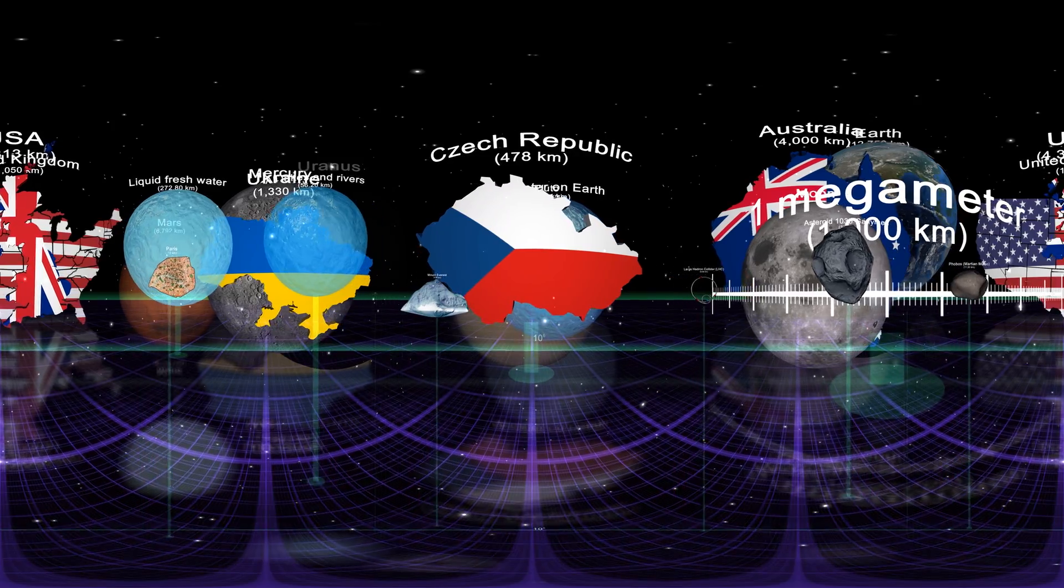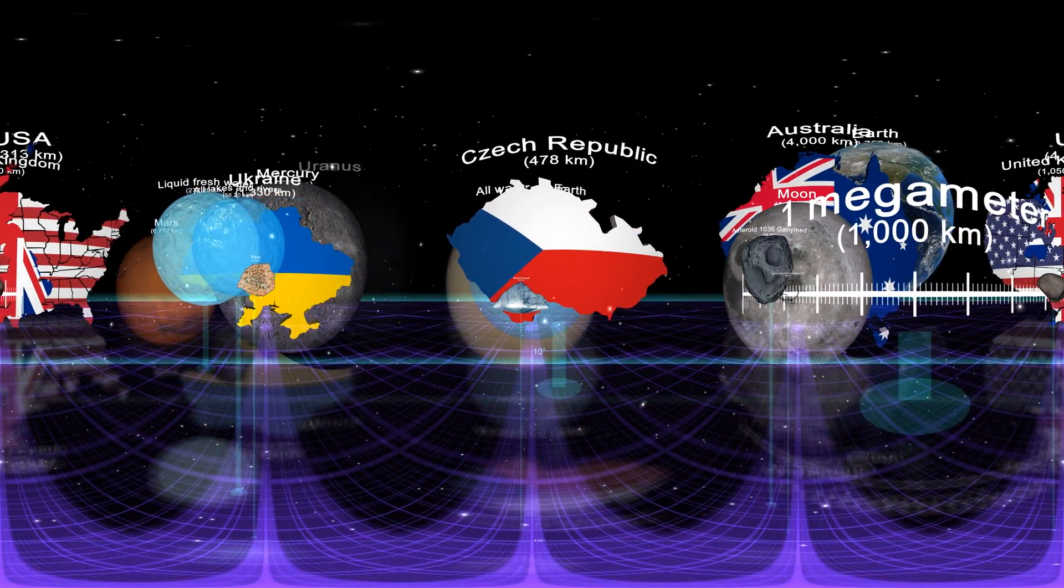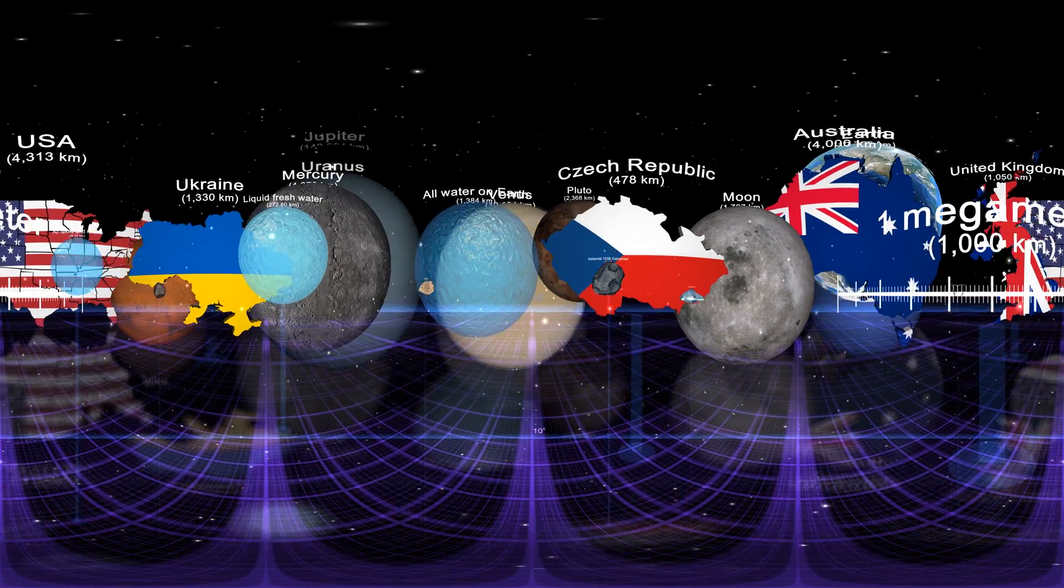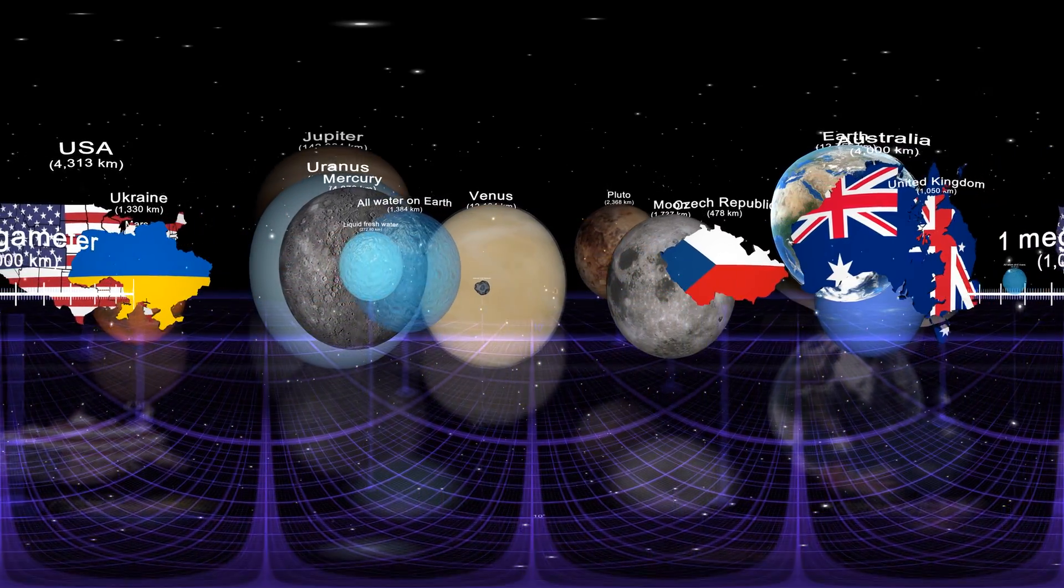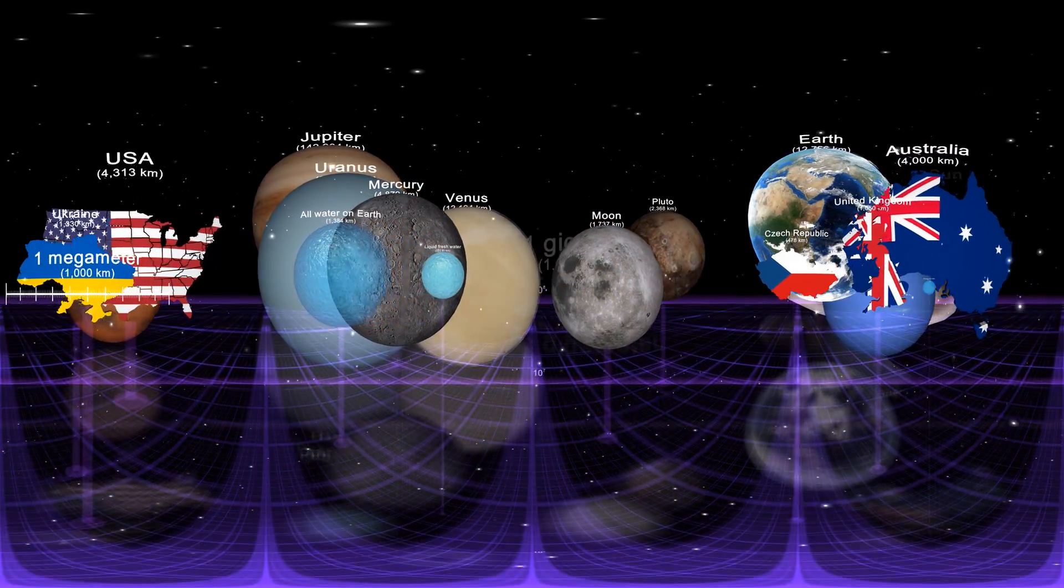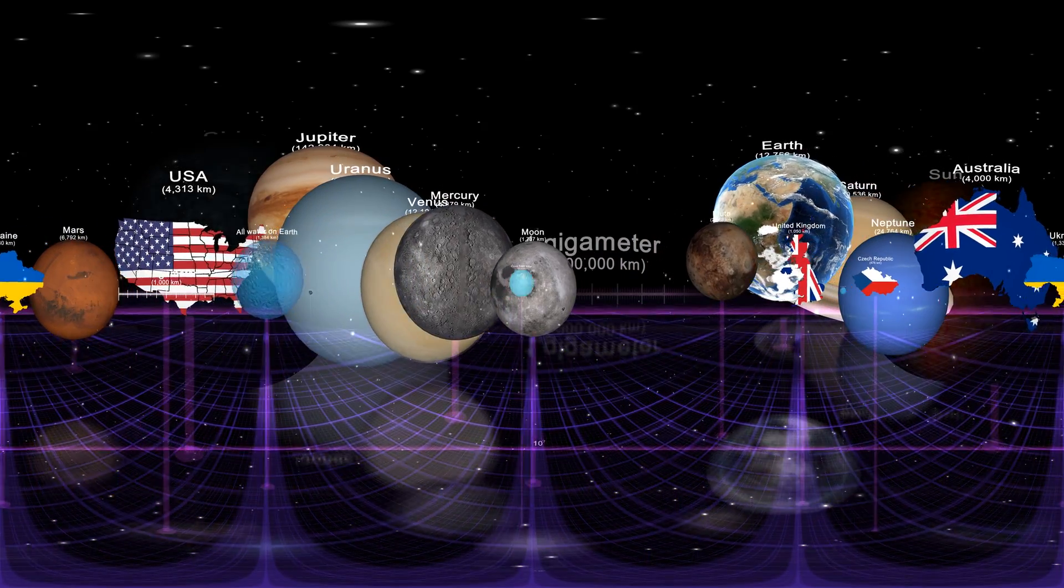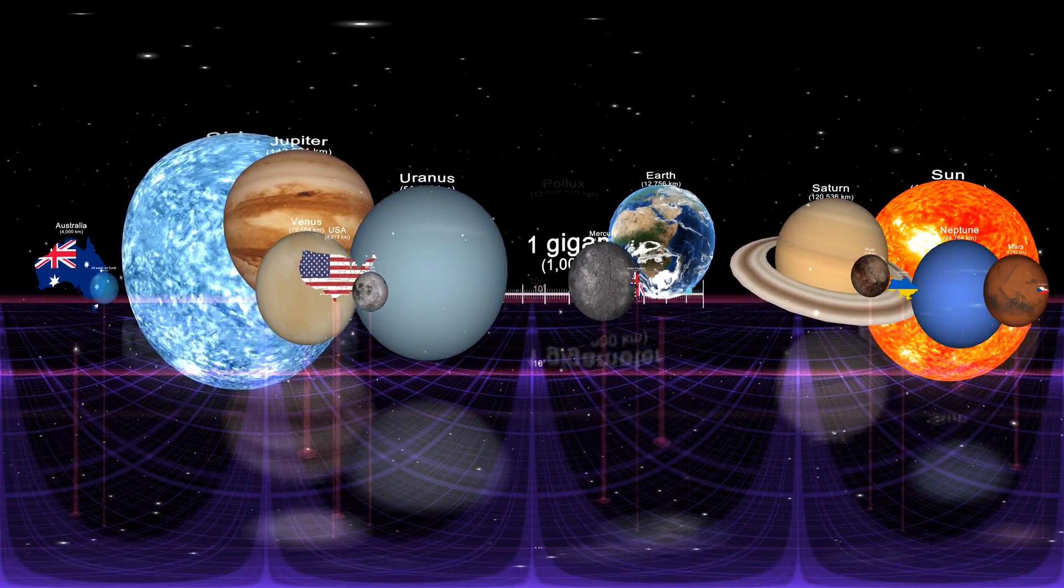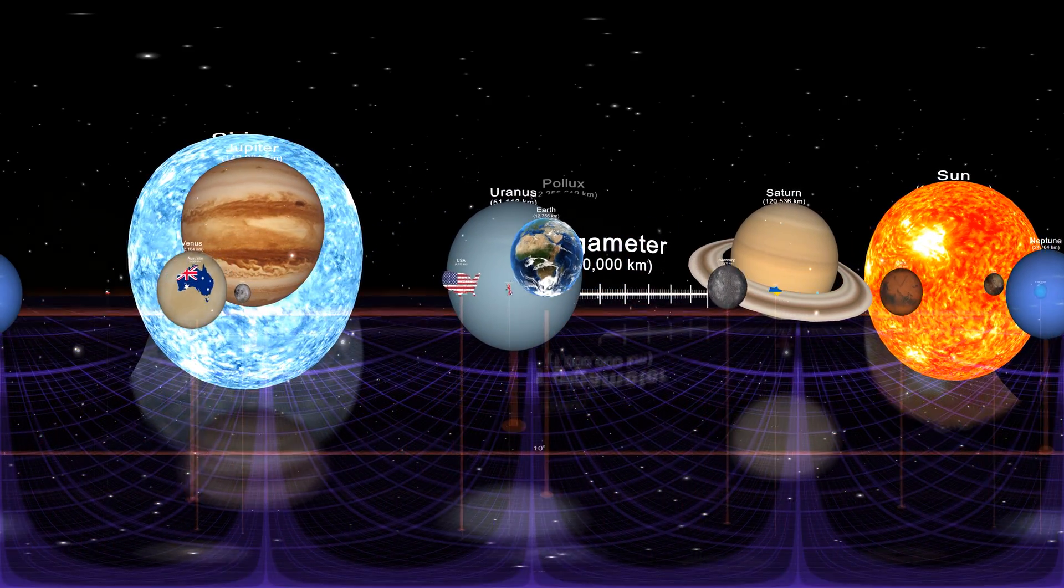But exploring our home planet wasn't enough. We've already visited our own moon in person, and sent numerous probes to explore our solar neighbourhood, gathering new insights about all kinds of comets, volcanic and frozen moons, rocky siblings to our Earth, and the ancient gas giants that protected us for millions of years.